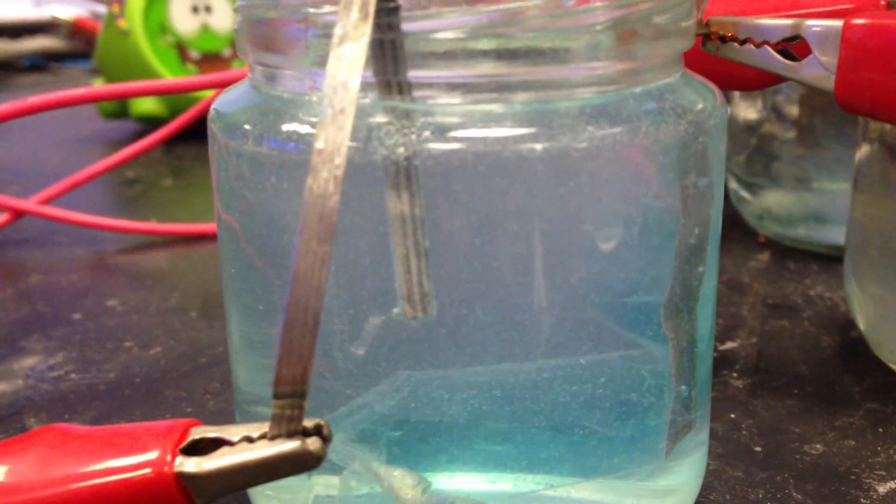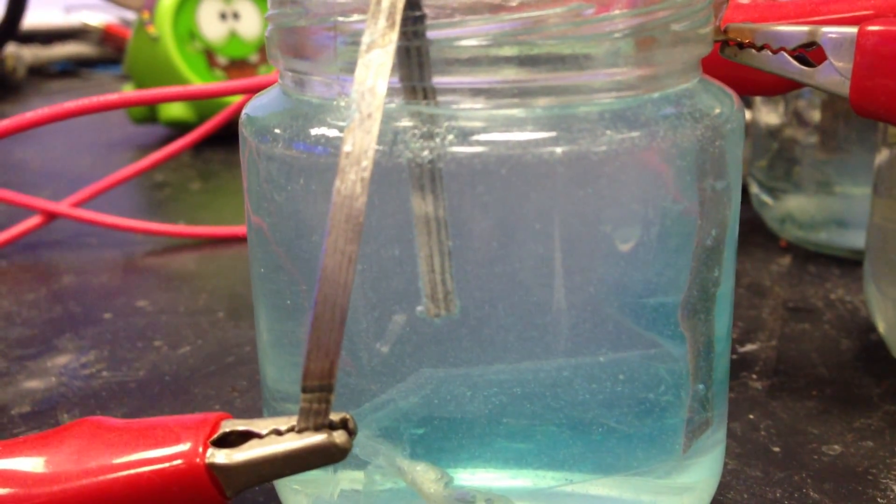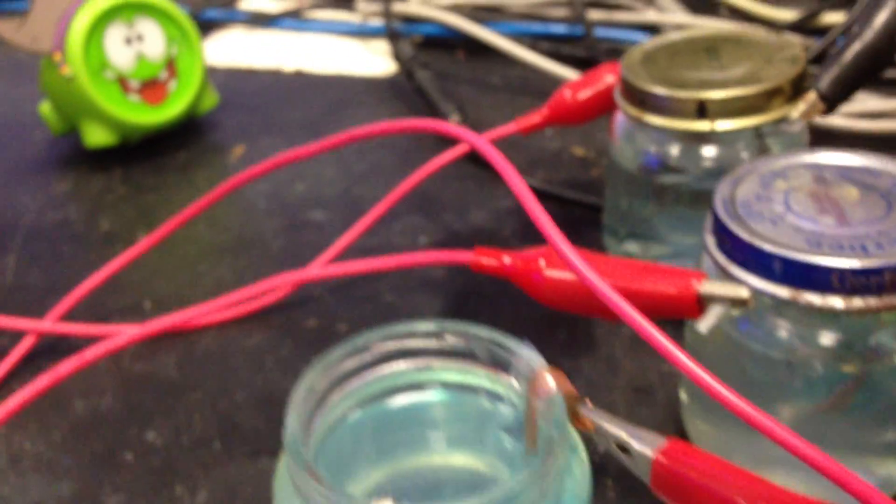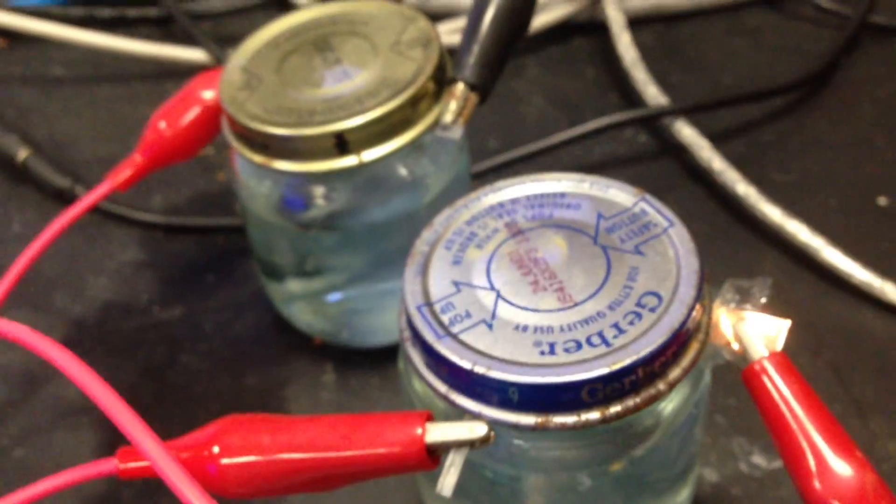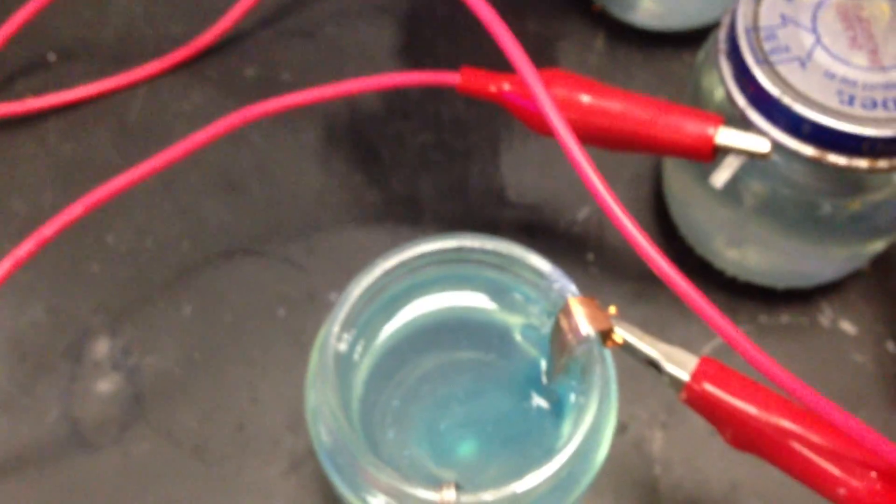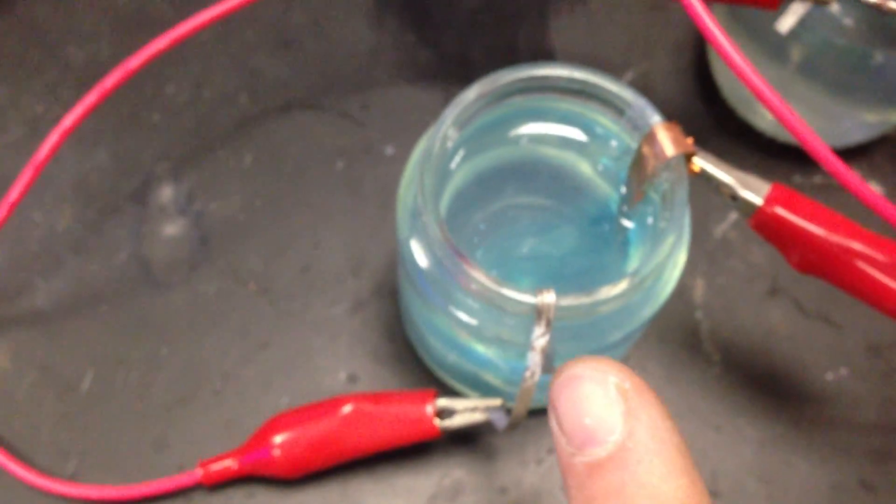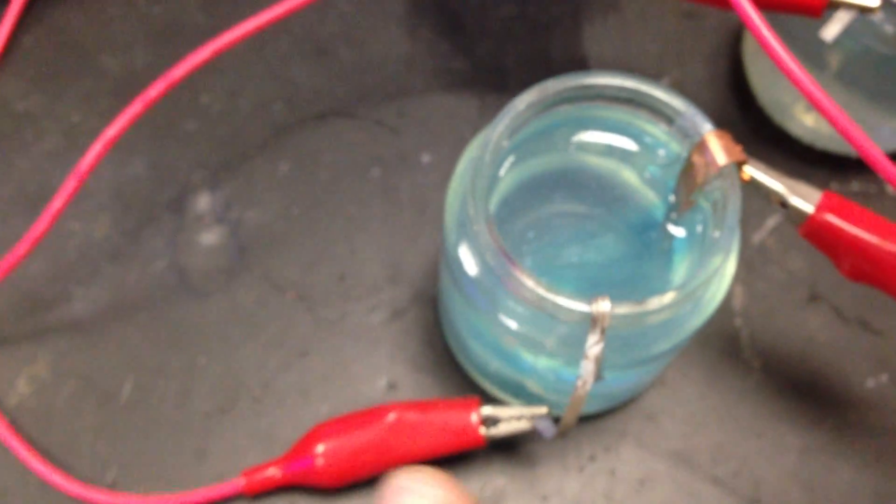What I mean by series is: I've got the cathode of one battery hooked up—this one runs to the radio—but this anode goes to the cathode of this battery.